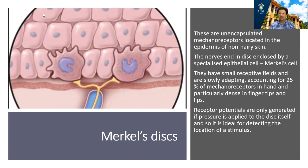This is a Merkel's disc. This is an unencapsulated mechanoreceptor found on non-hairy skin, like the palms of the hands. At the end of the nerve, it forms a specialized epithelial cell called the Merkel cell. These have small receptive fields and are slowly adapting. Slowly adapting receptors are important for telling us about the duration of the stimulus. Because of the nature of the disc structure, receptor potentials are only generated if the stimulus is applied directly to the disc itself, making these receptors very useful for localizing stimuli.